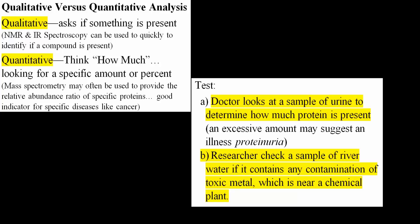Quantitative analysis — you should think of 'how much.' We're looking for a specific amount or percent. Mass spectrometry may often be used to provide the relative abundance ratio of specific proteins, which is a good indicator for specific diseases like cancer. This would be an example of a quantitative test.